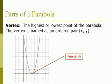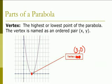When you're looking at a parabola, the first part we need to look at is the vertex. The vertex is the highest or the lowest point of a parabola, and it's named as an ordered pair (x, y). Looking at this picture, the vertex is right here. On the x-axis it's 1, 2, 3, and on the y-axis it's 0, so this vertex is (3, 0) — the lowest point of the graph.